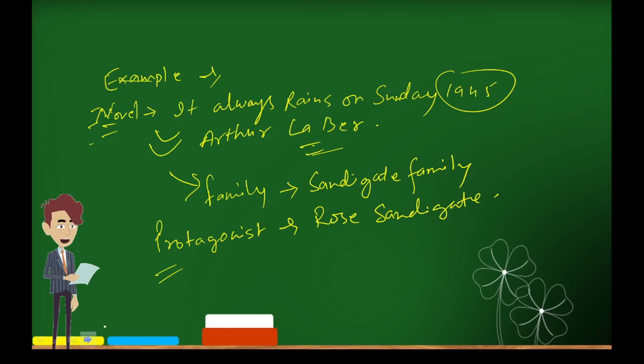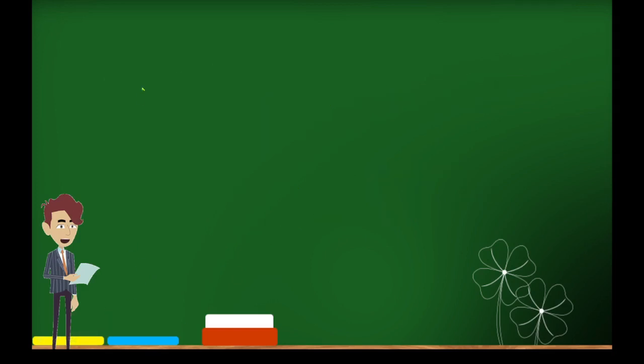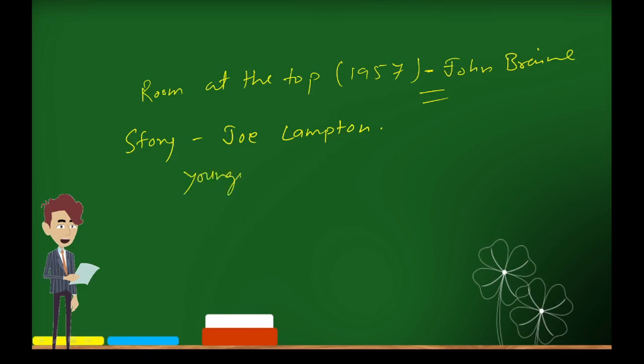Next work is Room at the Top, Room at the Top in 1957 by John Braine. This is the story of Joe Lampton, a young man with ambitions for a better life in post-war Britain. Braine presents the struggle faced by the younger generation in post-war.